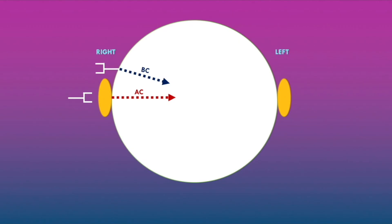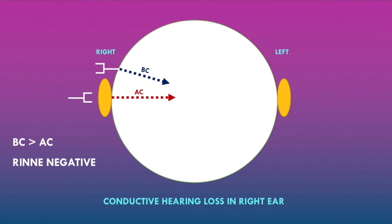If the sound is heard loudest when the vibrating tuning fork is placed over the mastoid bone compared to over the right ear, this indicates bone conduction is greater than air conduction — a Rinne negative test. This indicates conductive hearing loss in the right ear.